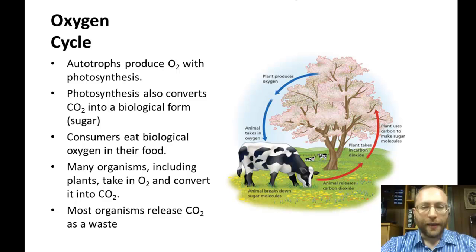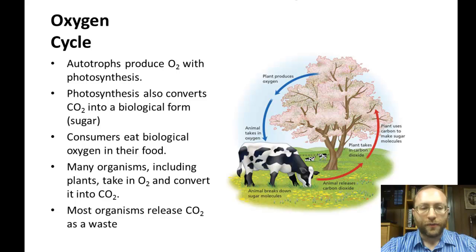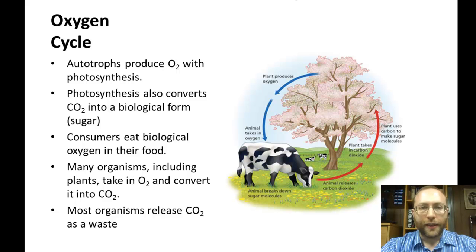Here's the oxygen cycle. The only thing you need to know about that is that autotrophs — remember, autotrophs are things that make their own food — they produce oxygen through photosynthesis. Photosynthesis also takes carbon dioxide, which contains two oxygen atoms, and converts it into a biological form of sugar. Consumers, like us, eat this biological oxygen in our food. And many organisms, like plants and like us, also take in atmospheric oxygen and convert it into carbon dioxide, which is released as waste.